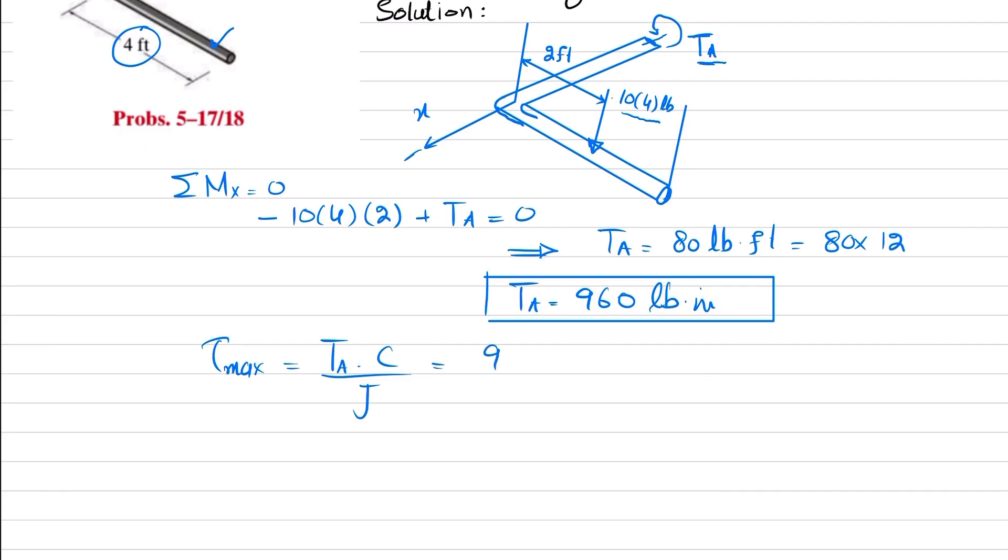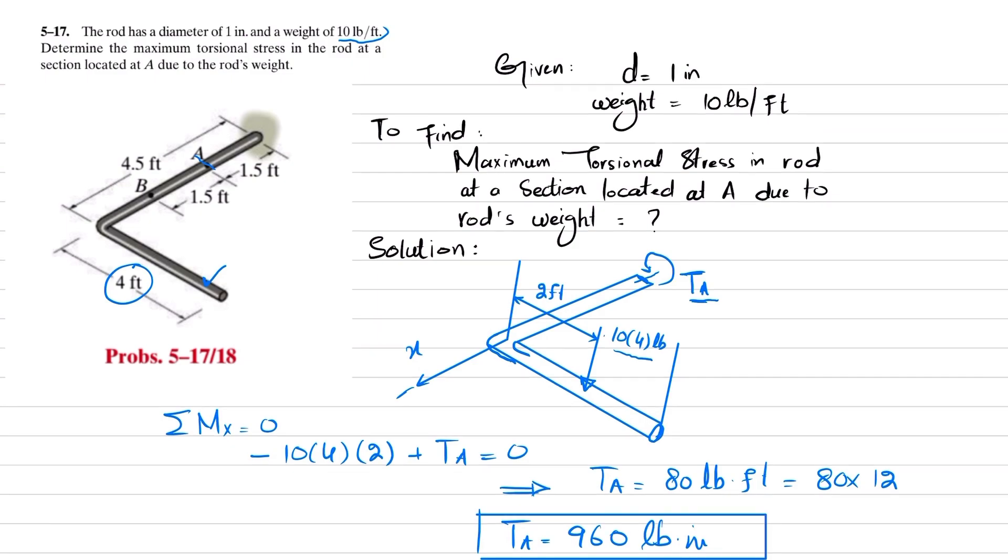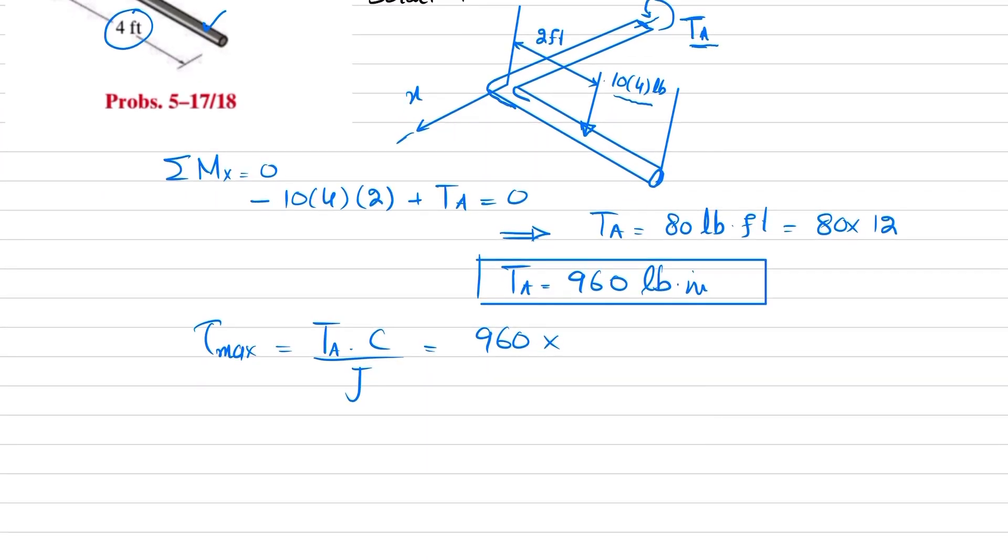Torque is 960, c - diameter is given as 1 inch, so c will be equal to 0.5 inch - divided by π/2 times c (0.5) to the power 4.